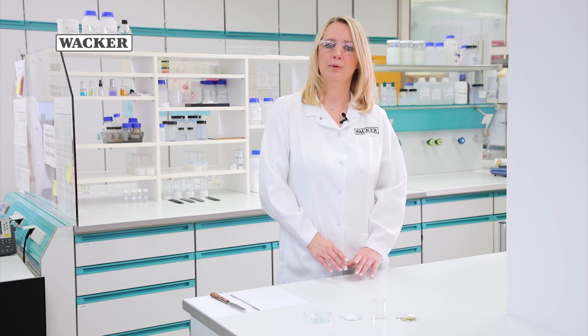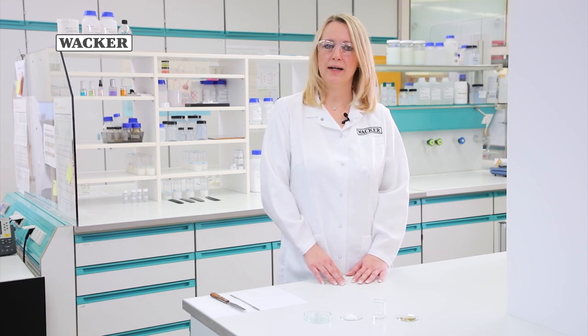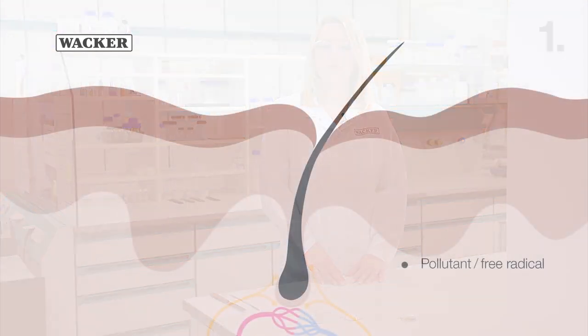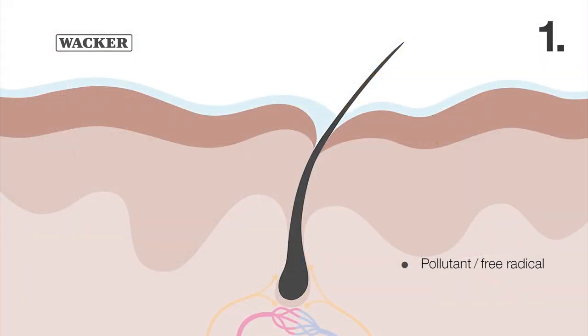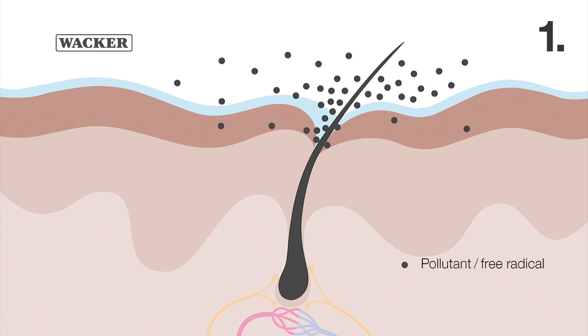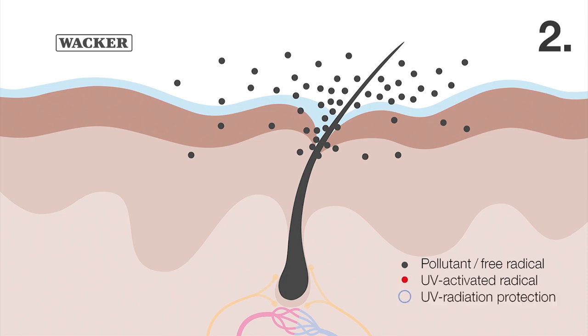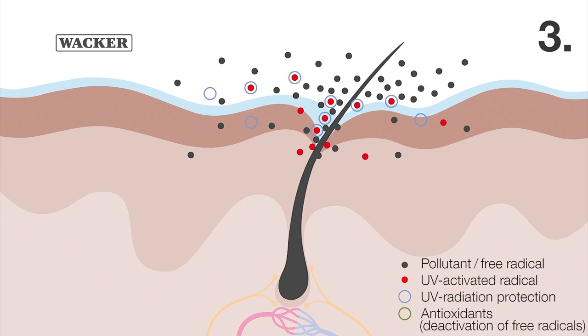But how exactly can an anti-pollution lotion protect the skin? We have formulated our Triple Defense Anti-Pollution Lotion to show three different modes of action. Firstly, a film former develops a barrier against external environmental effects. Secondly, by using an effective UV screen we prevent the formation of radicals induced by radiation. Thirdly, an antioxidant neutralizes free radicals that have been formed within the skin.